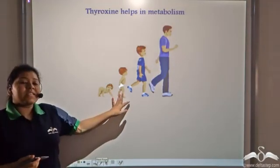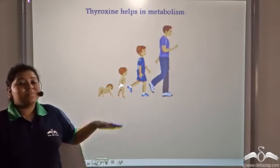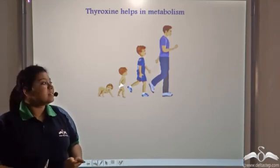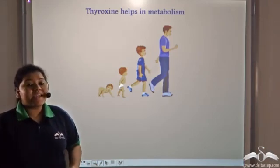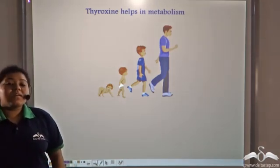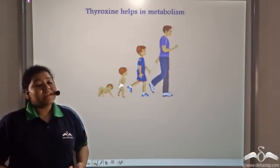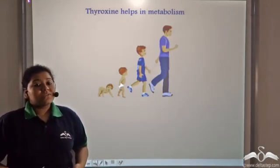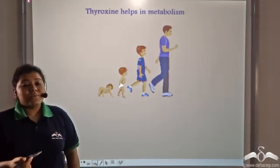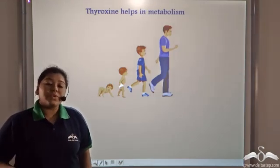Thyroxine helps in regulating metabolism. It provides energy to replace dead, worn out cells and also provides energy for growth because of cell division. However, the level of thyroxine in the body is always limited, so it is not enough to cause growth in the body alone. It therefore requires an additional hormone to cause growth.